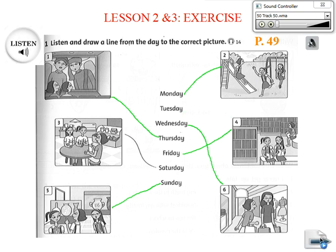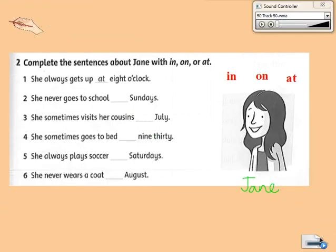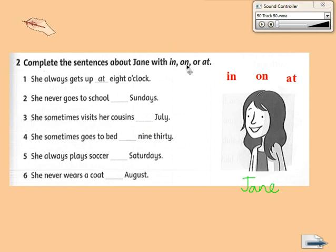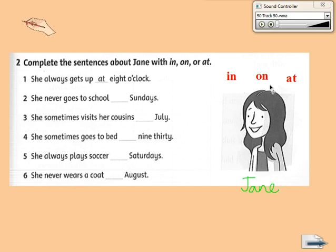Okay, we turn to exercise number 2. Complete the sentences about Jane with in, on, or at. Now, this is Jane. We will complete the sentences by filling in the prepositions in, on, or at. Remember how to use these prepositions correctly.